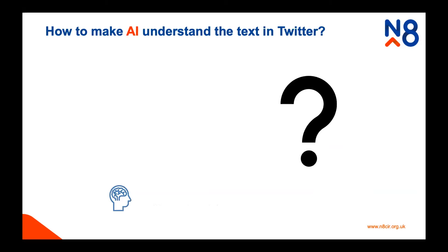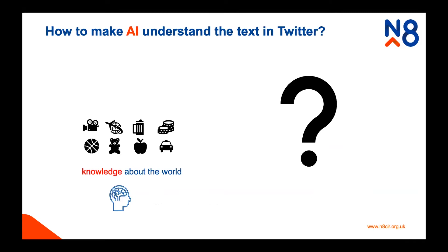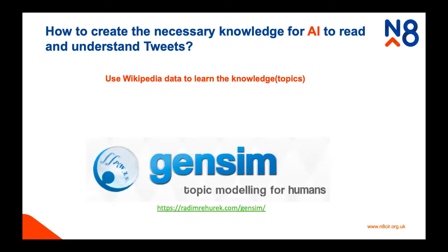Let's first start with how humans understand things. We have various knowledge about the world already - we know about films, travel, drinks, money, sports, gifts, fruits, cars. We also have the right level of abstraction. By 'right level' I mean we are not using words too simple that we can't capture the meaning, nor using very complex words which are misleading. We use the right amount of abstraction when we read and send context. That's how we understand things.